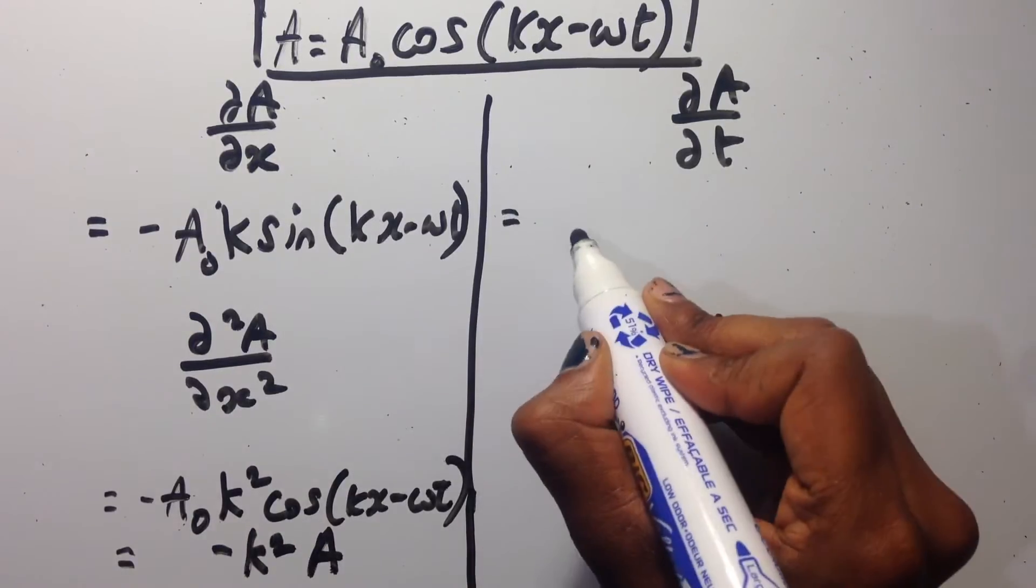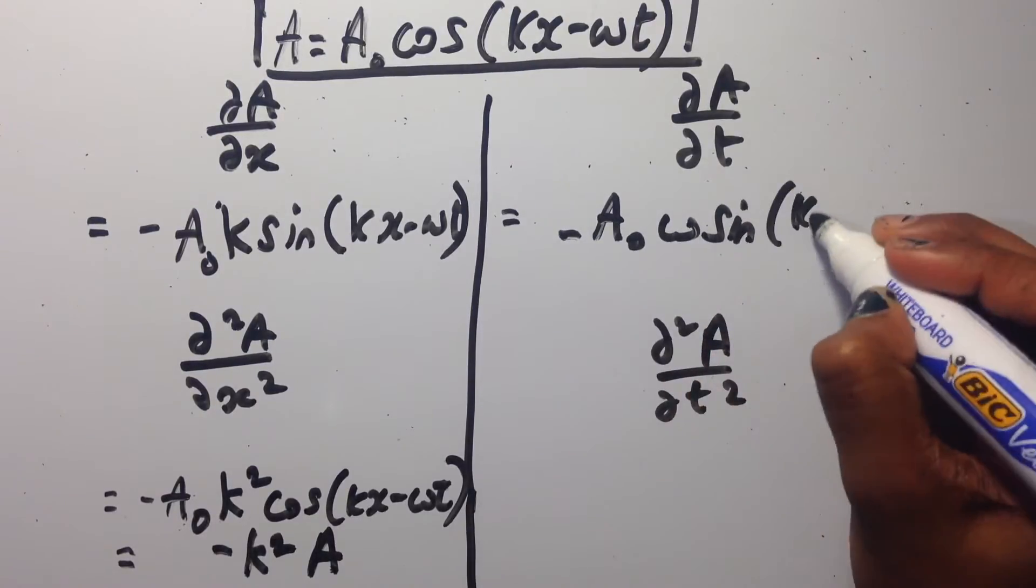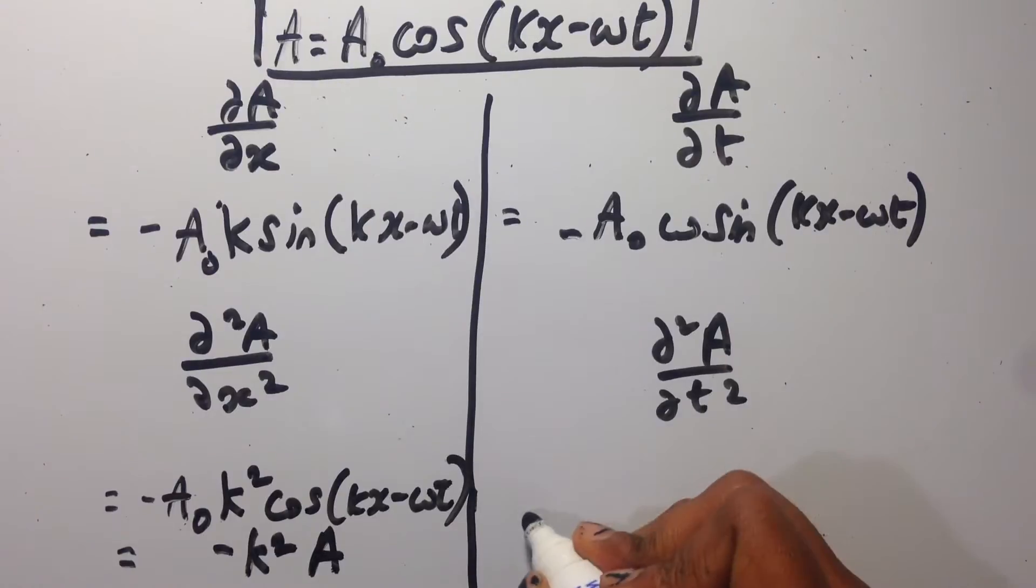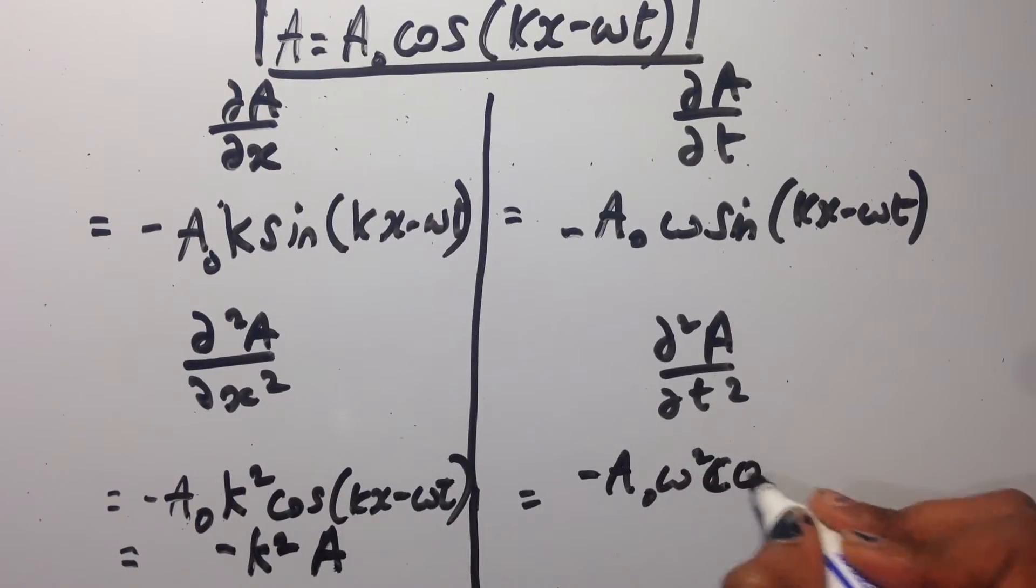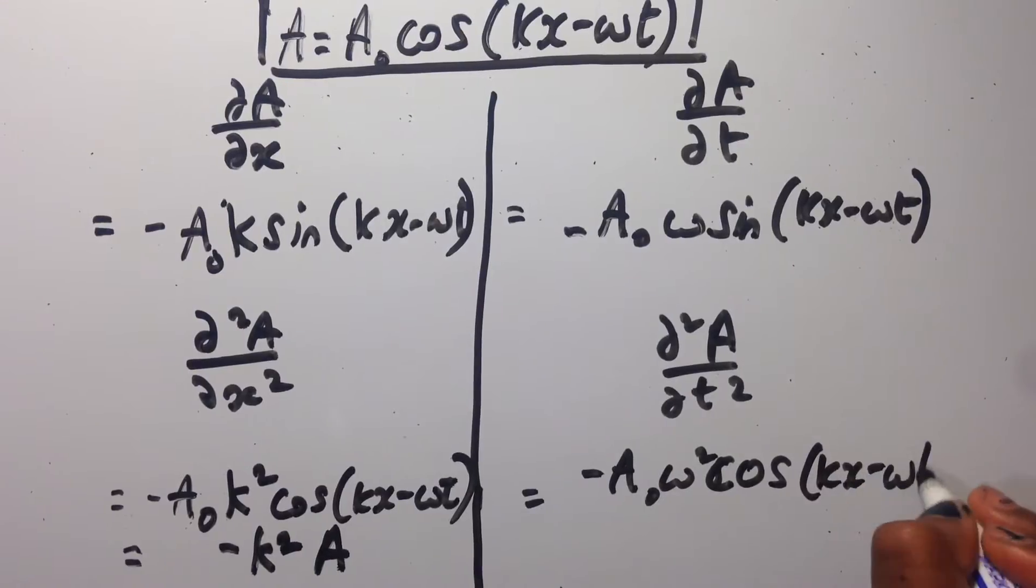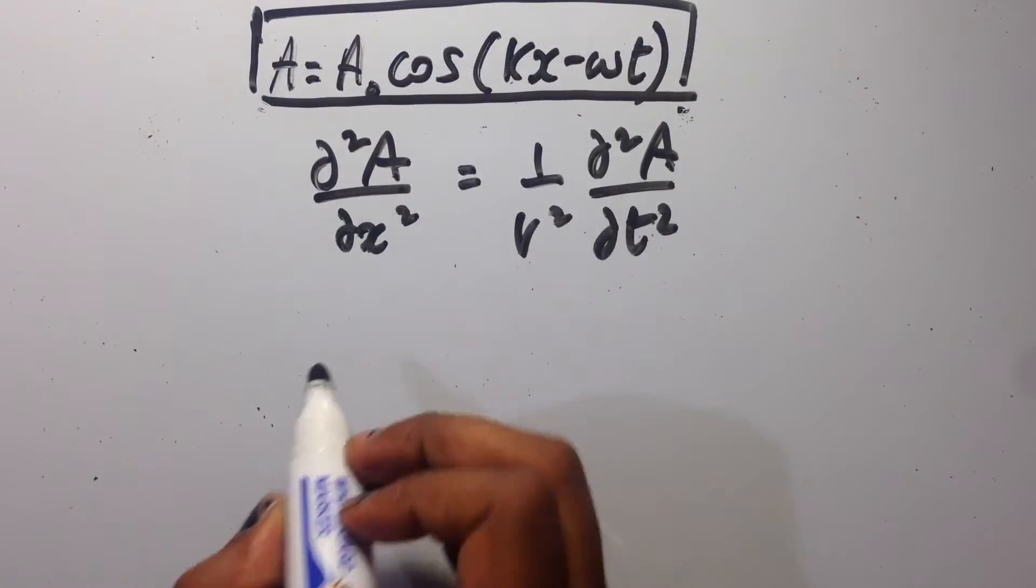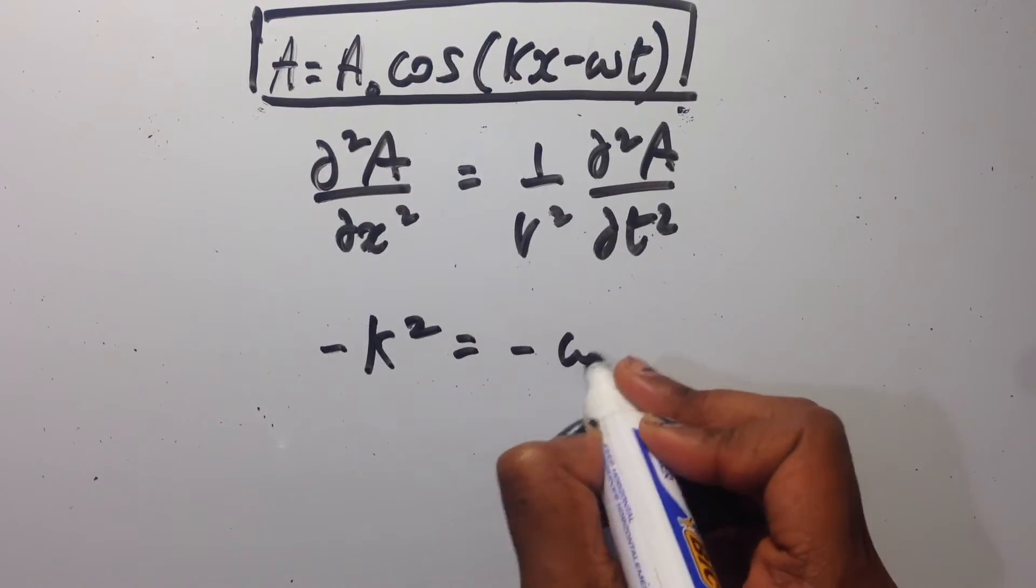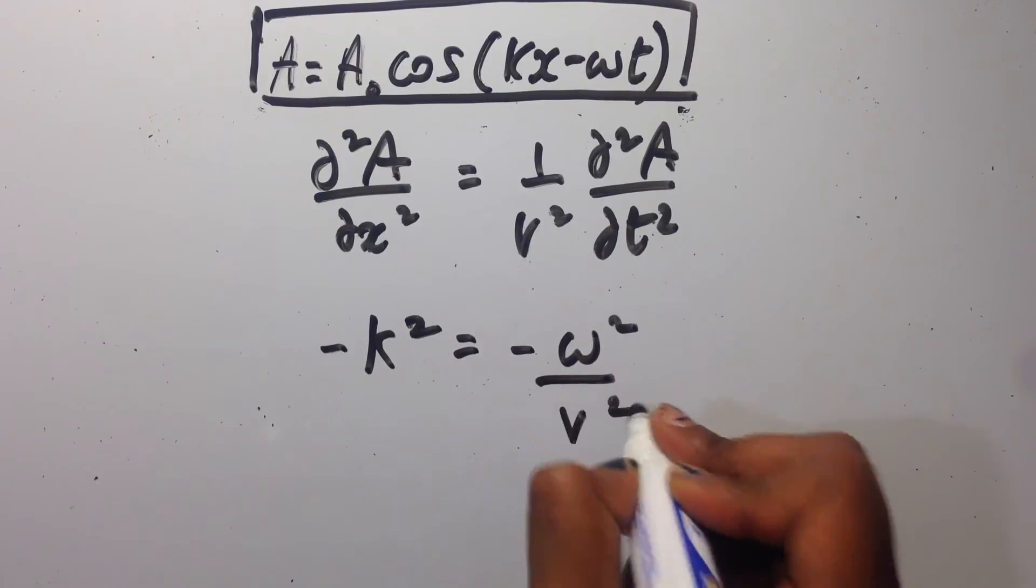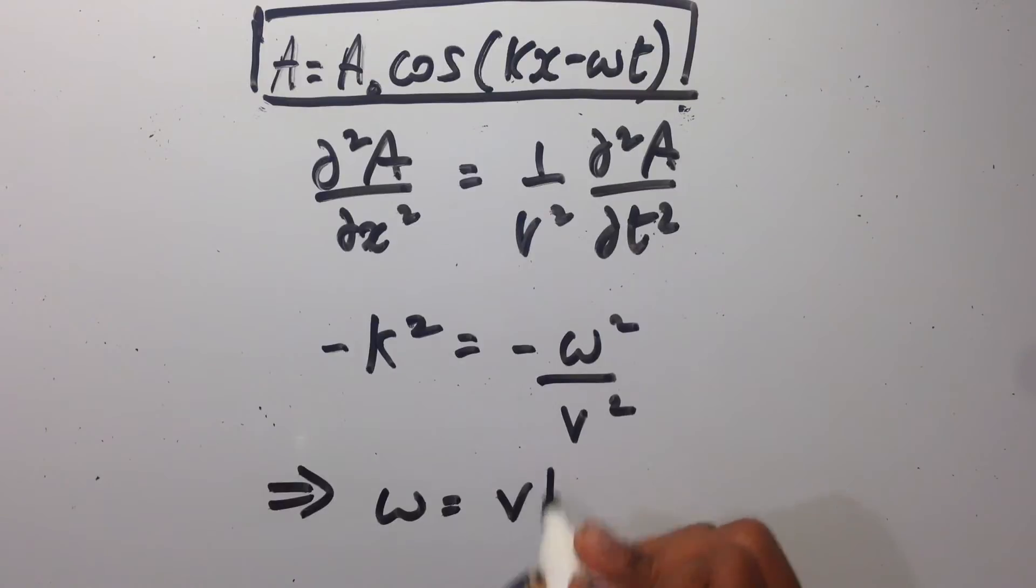We shall now differentiate our solution but this time with respect to time. And also differentiate again so that we can find d squared A by dt squared. And doing this will give us minus omega squared A. Subbing this back into our plane wave equation gives us minus k squared equals minus omega squared over v squared. And therefore omega equals v times the magnitude of k.